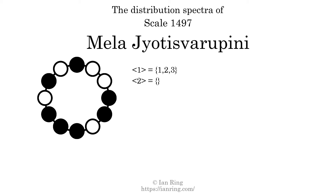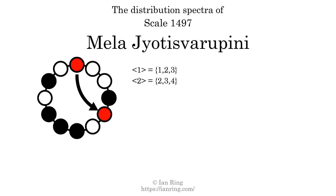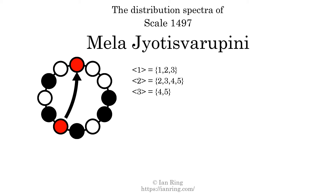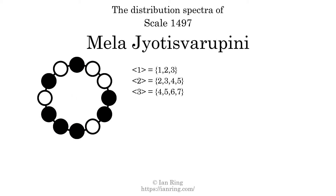The generic interval of 2 scale steps comes in 4 different specific interval sizes: 2 semitones, 3 semitones, 4 semitones, and 5 semitones. The spectrum width of this generic interval is 3. The generic interval of 3 scale steps comes in 4 different specific interval sizes: 4 semitones, 5 semitones, 6 semitones, and 7 semitones. The spectrum width of this generic interval is 3.